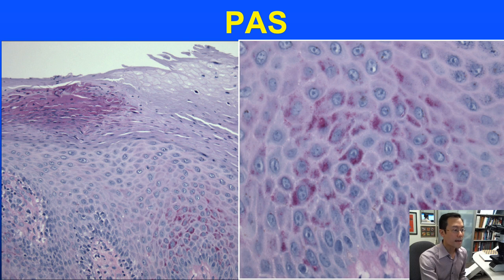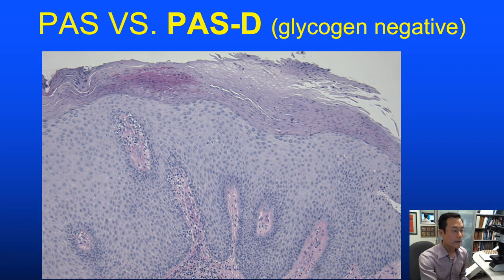Here's our PAS stain—we can see it staining some nonspecific crust in the parakeratosis on the upper left, but more specific is the cytoplasmic positivity shown on the right. On the PASD, the nonspecific crust on the upper left is still there, but the glycogen in the spinous layer is no longer seen.